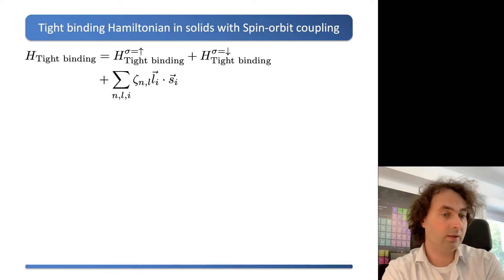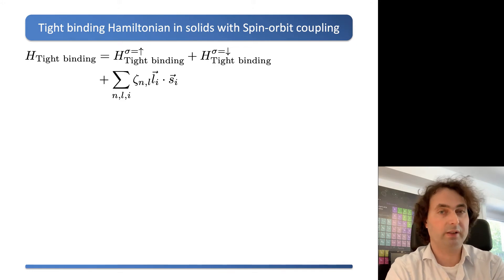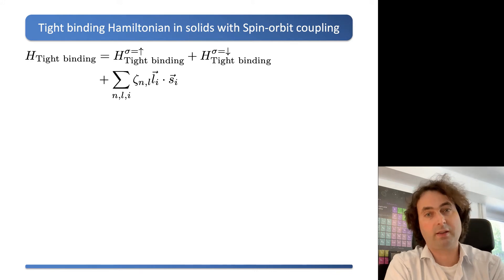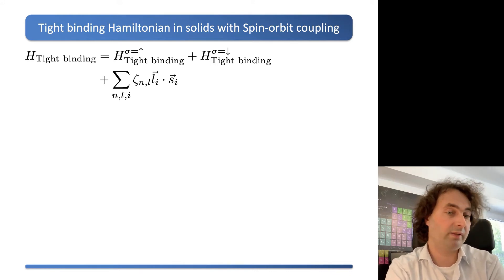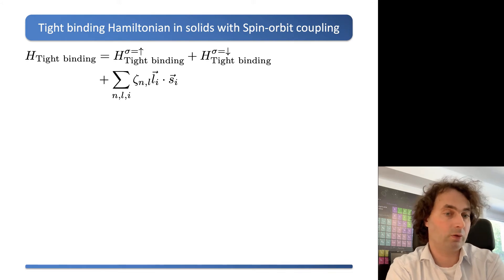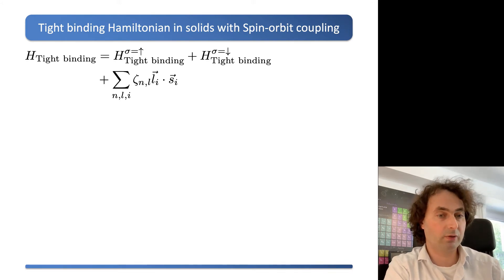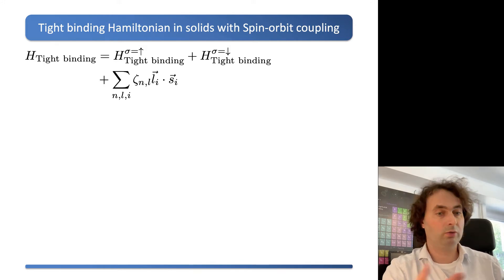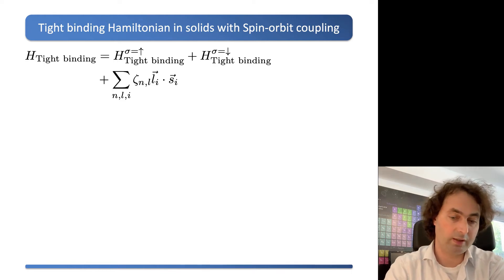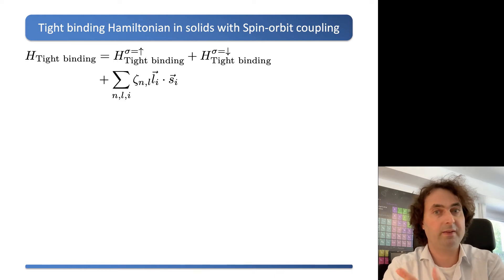What we've seen in the previous video is that we can write down our tight-binding Hamiltonian with spin-orbit coupling as a tight-binding Hamiltonian for spin-up and a tight-binding Hamiltonian for spin-down, which are equal to each other except that one acts on the spin-up states and one on the spin-down states. For a p-shell we have the px, py, pz orbitals, and now you just double this for spin-up and spin-down, and on top of that you have the spin-orbit coupling that acts locally.